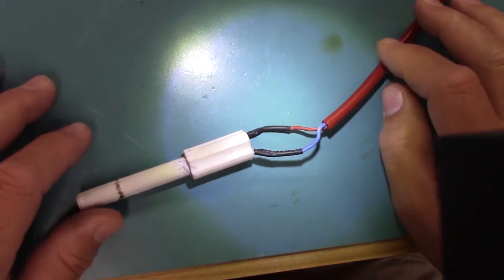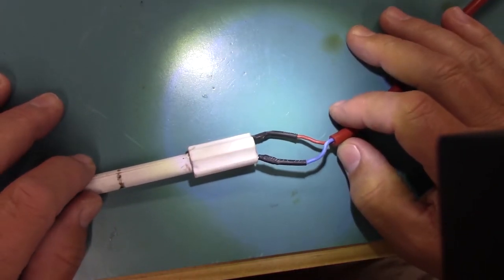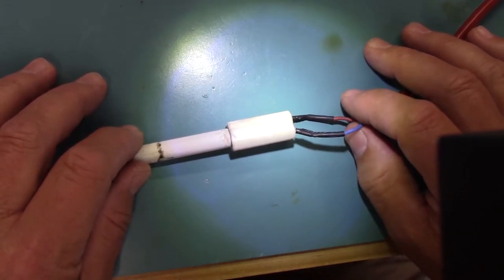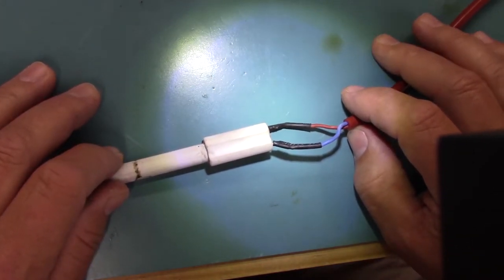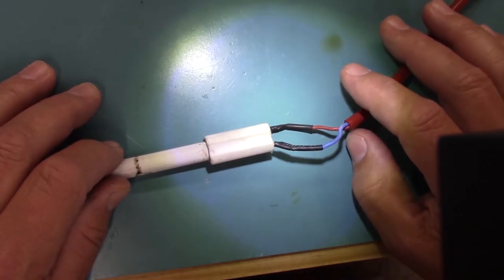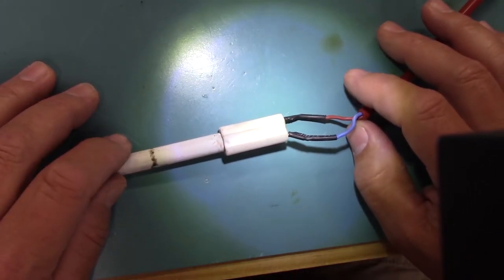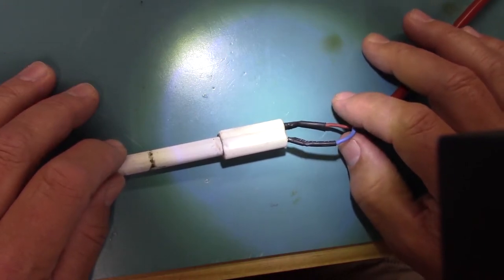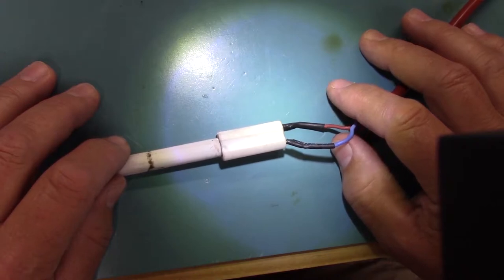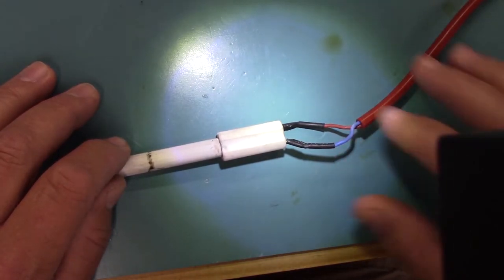So we're going to take a look at this igniter. This igniter was reported to be popping the GFCI, which is a ground fault circuit interrupt, and also he reported that it popped the breaker. And they may be related, but I don't think so.